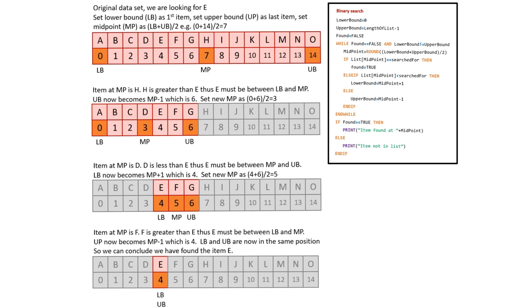In this situation, the lower bound and the upper bound are now fixed in the same position. We can now conclude we've found the item E after 4 searches.